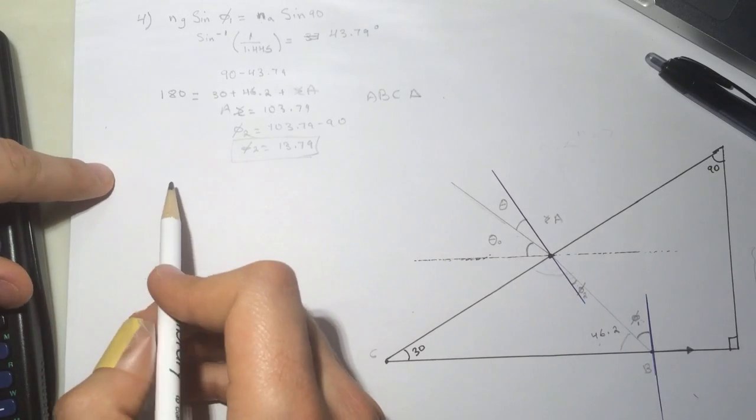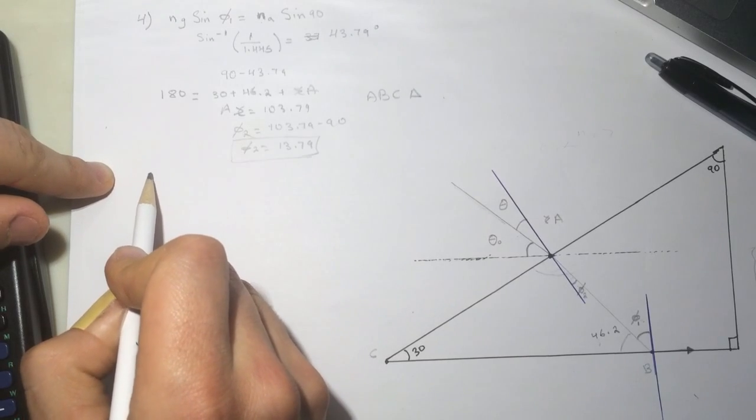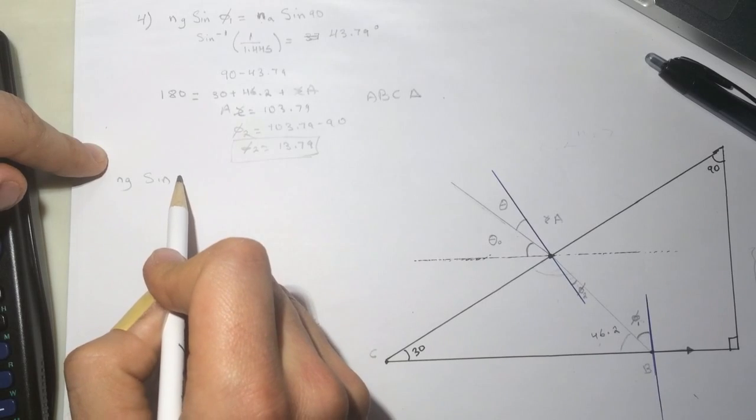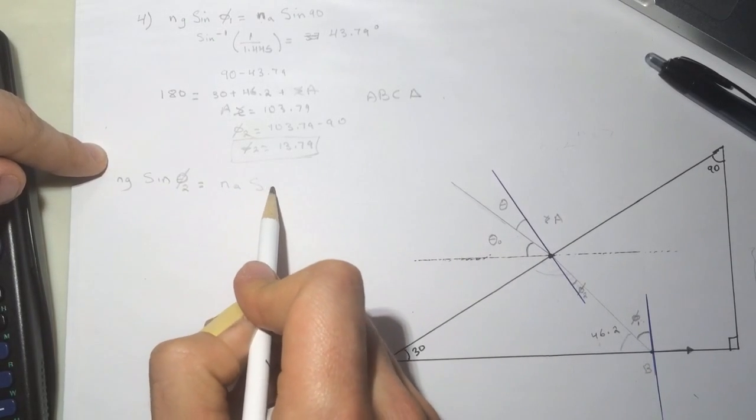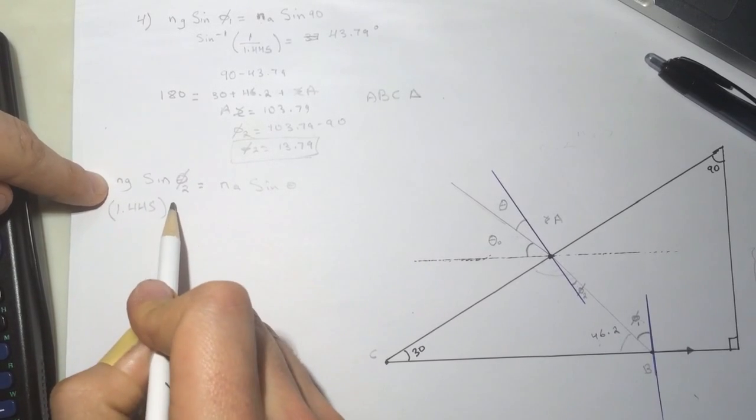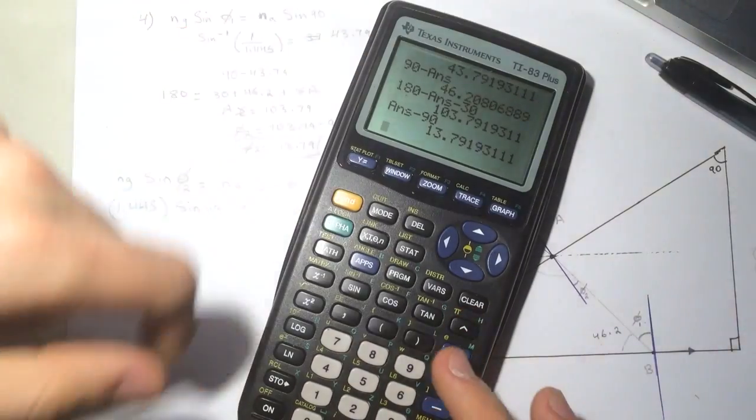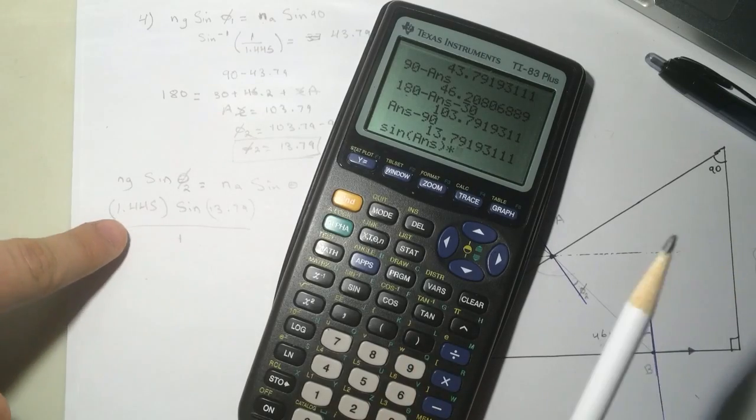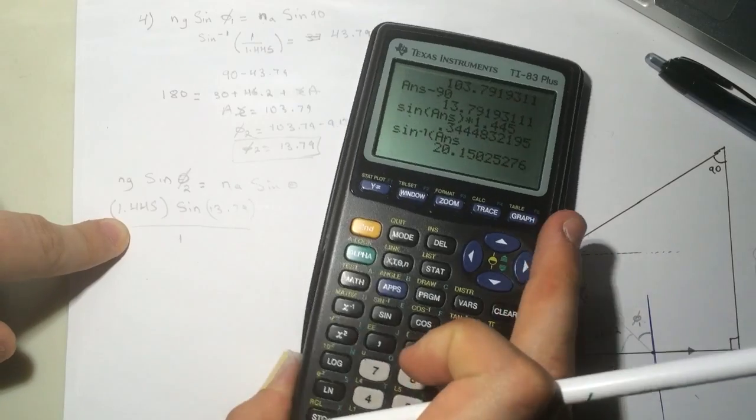We have this guy. We need to connect it to this guy in order to find this guy, the theta out. We connect them by Snell's law. I'm still forgetting the name. So we're going from the ng prism, phi 2, equal to n air because we're going to air sine of the theta, which is this guy here. The ng is 1.445 times the sine of 13.79. Sine of the answer, and this will be divided by 1, the n air. Sine of answer times 1.445 will be equal to this. And take the sine inverse.